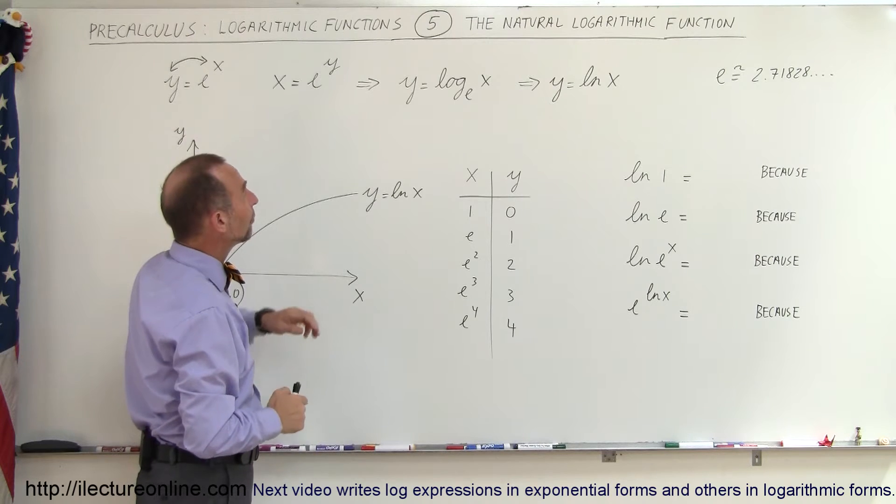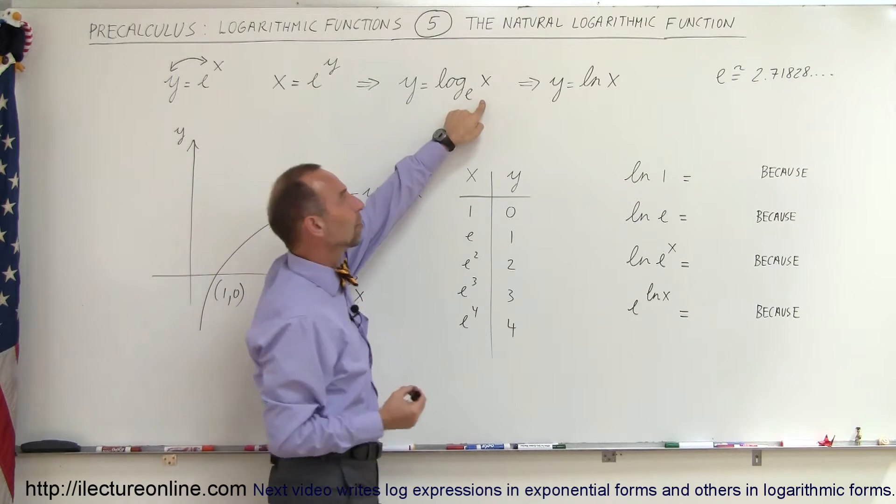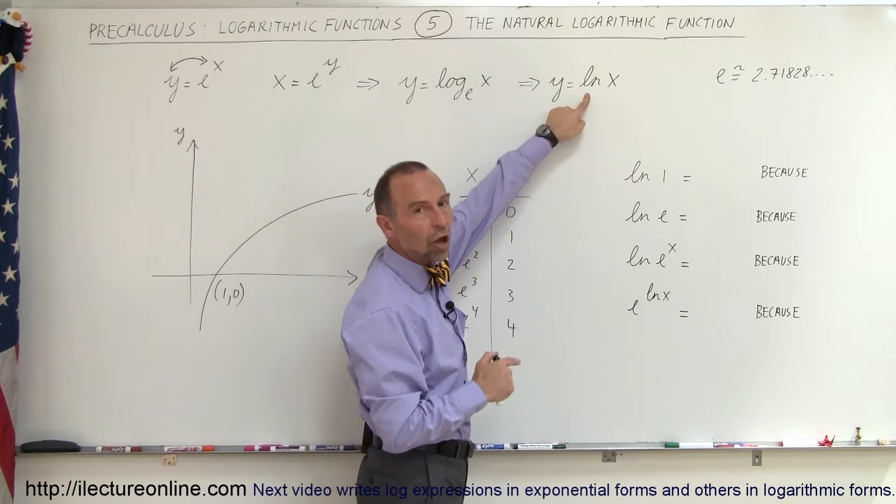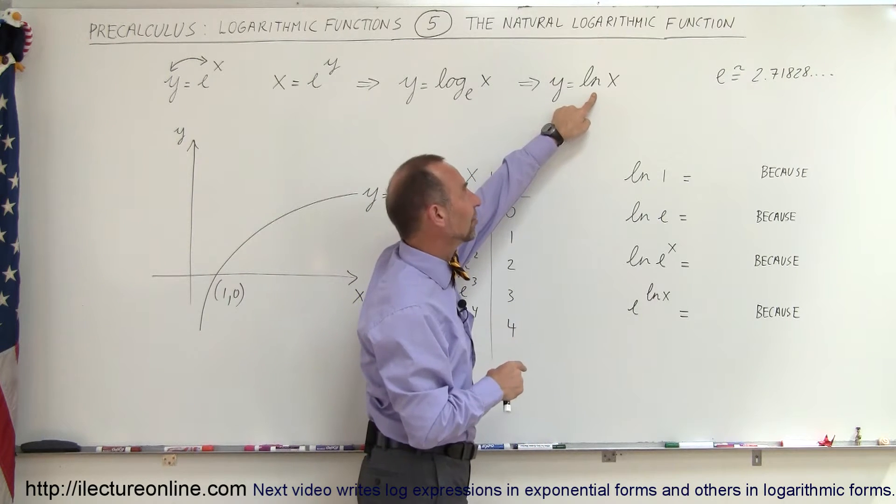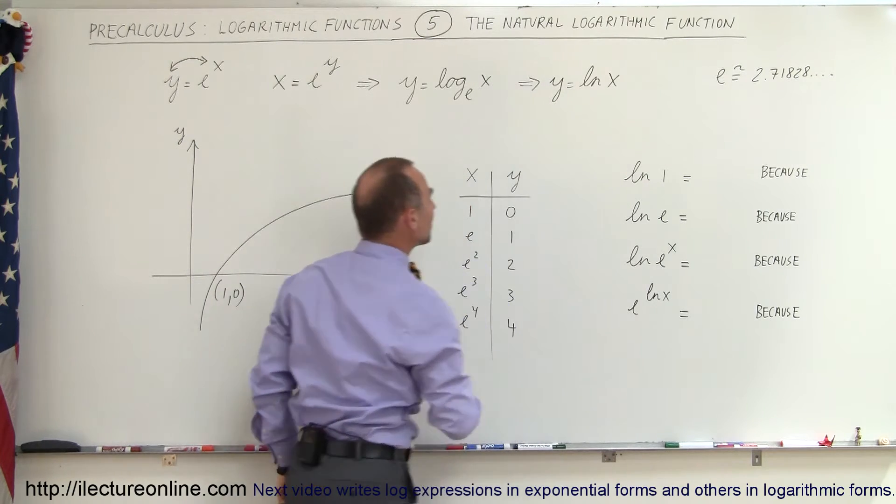And so if we then write y equals log to the base e of x, that's exactly the same as writing y equals ln of x. That means the natural log. L stands for log and n stands for natural. They do have the letters reversed, but y equals the natural log of x and that's what that means.